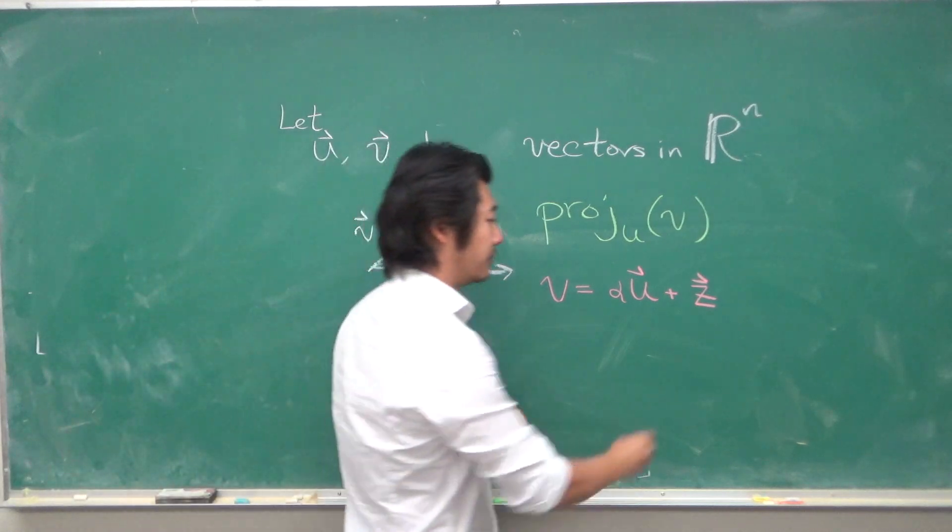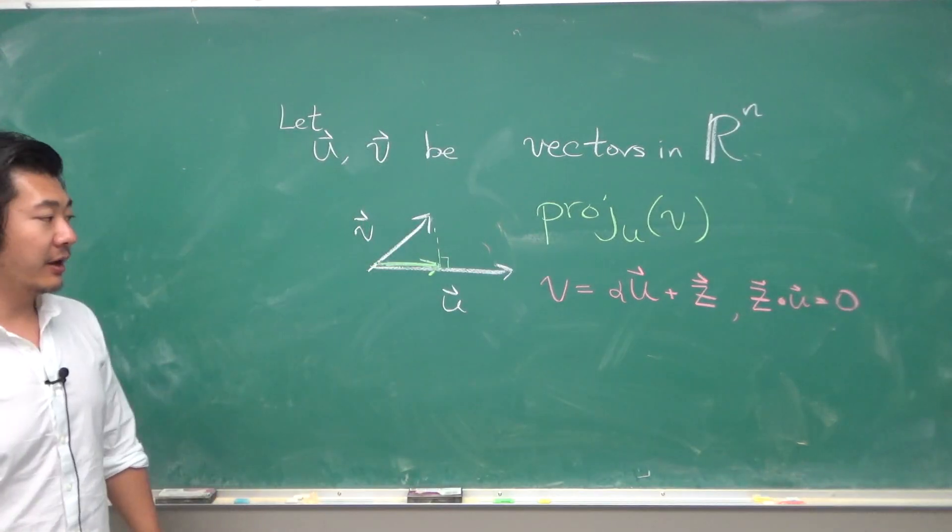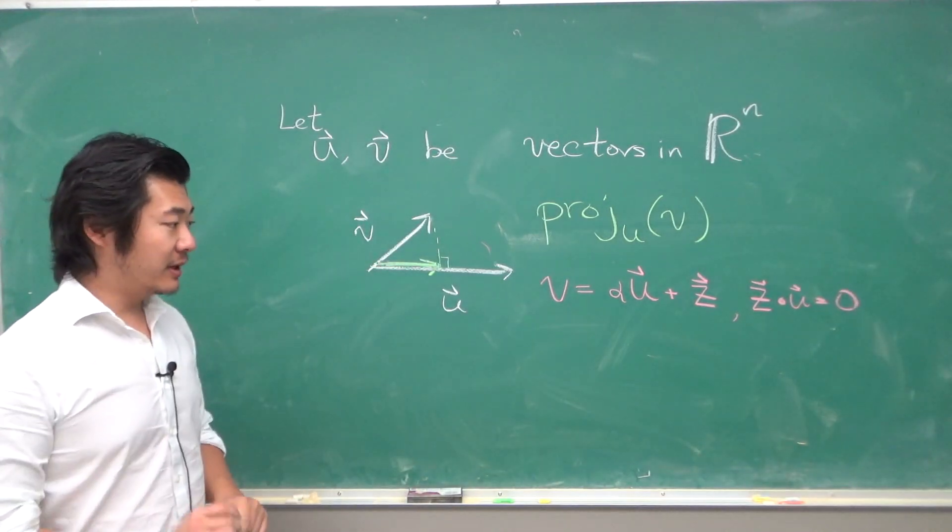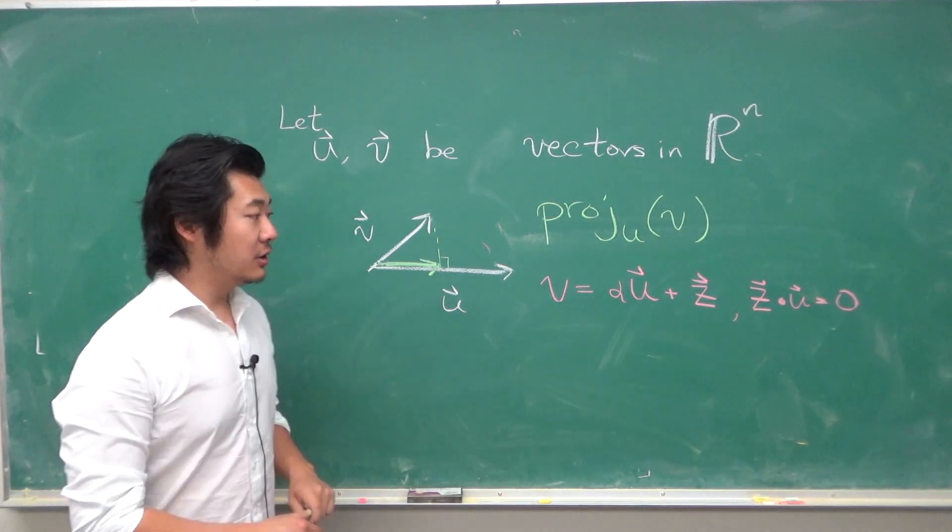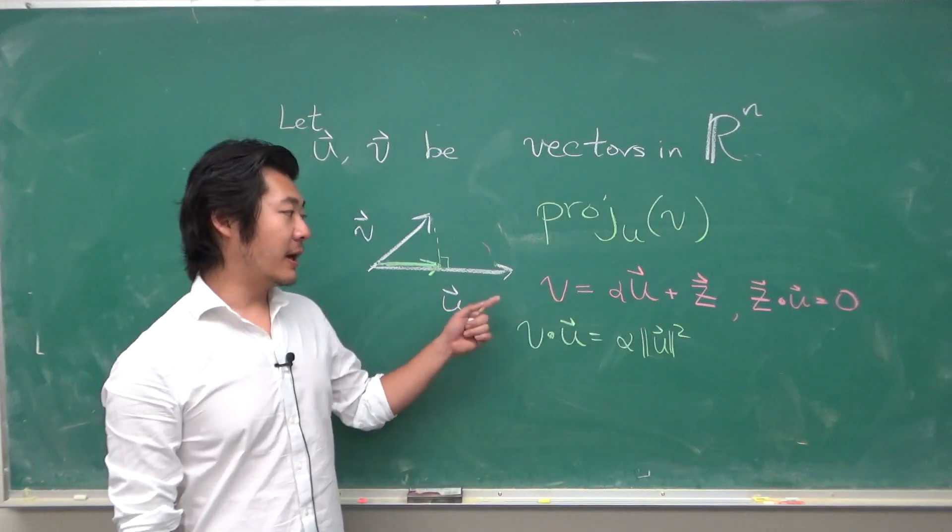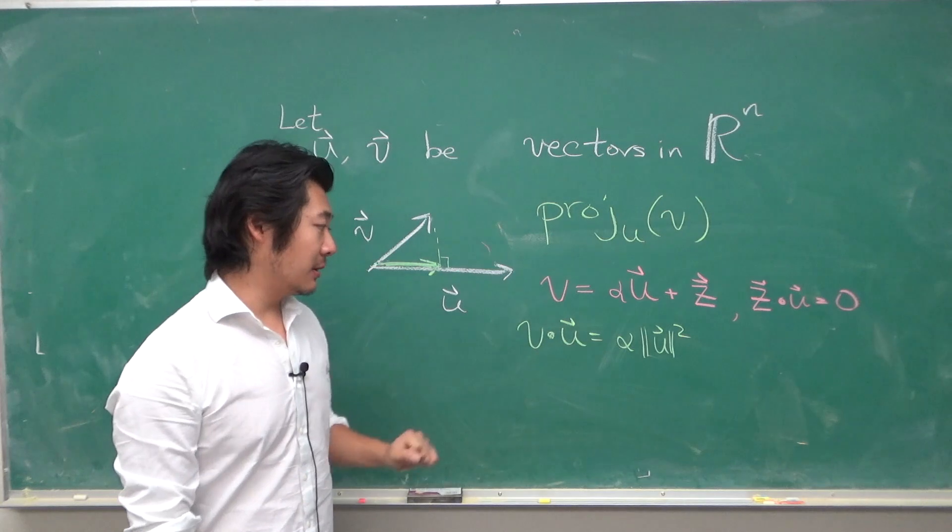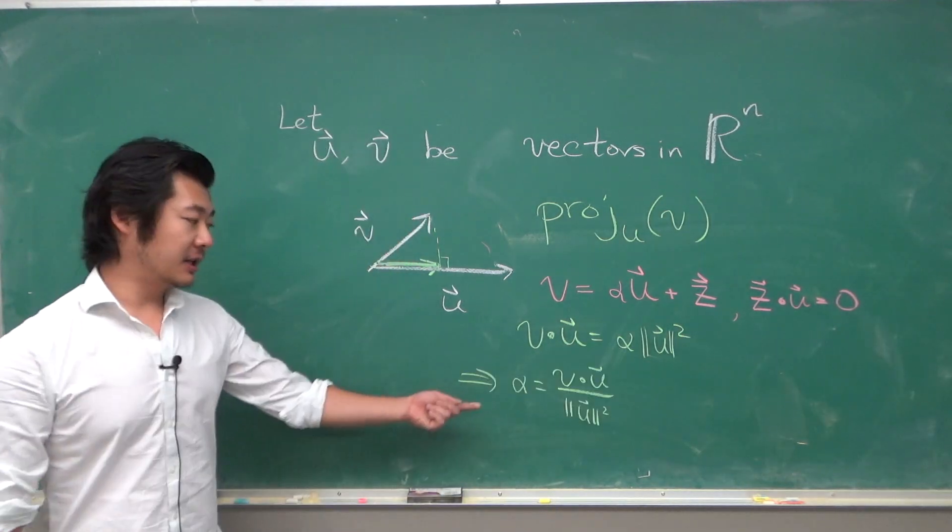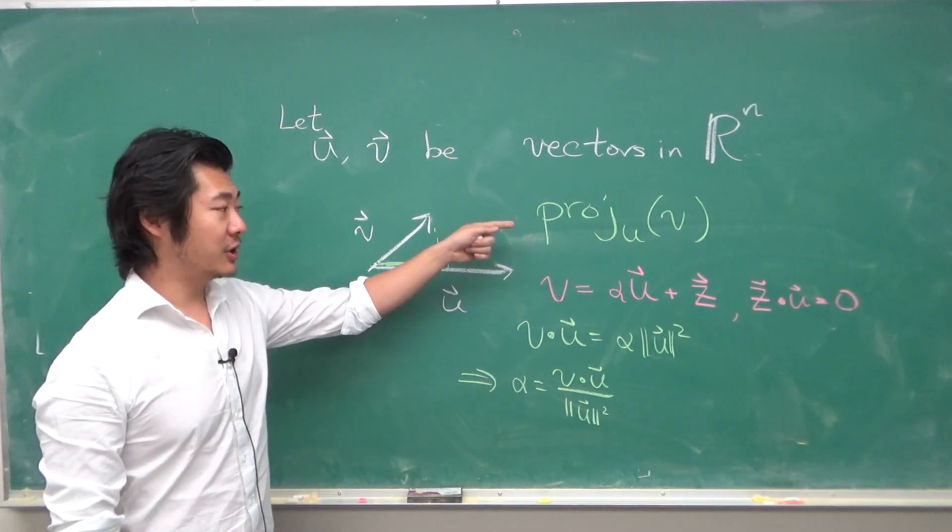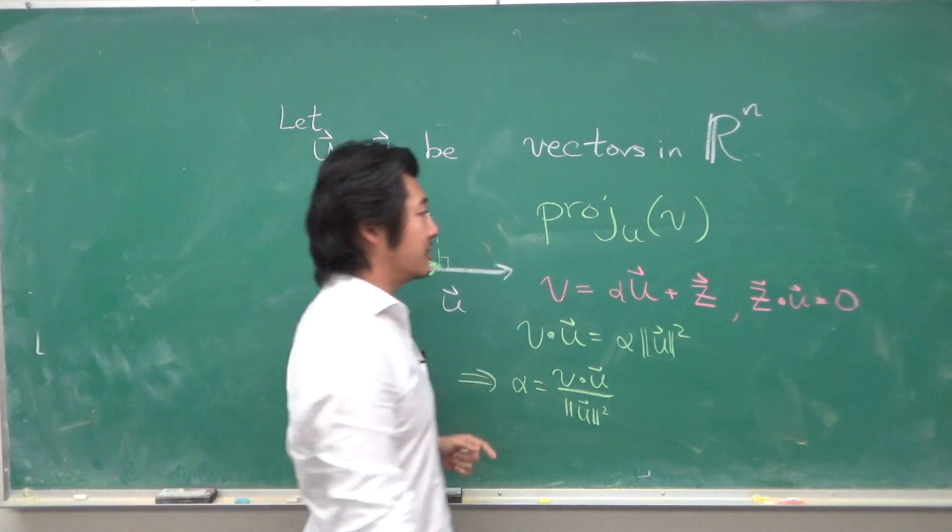How can we find such an alpha? We apply the same trick: apply u to both sides. When we apply u, the z·u term becomes zero, so we're left with just this. Actually, alpha is given by this formula: the projection of v onto u is given by v·u divided by ||u||² times the vector u.